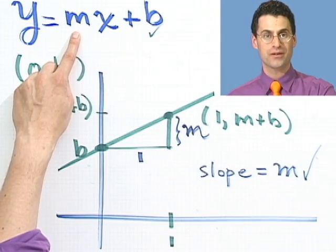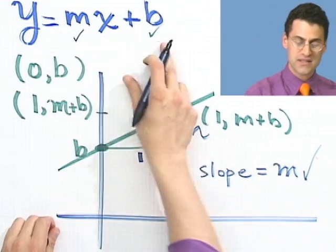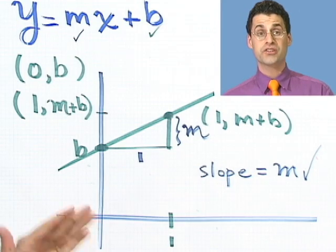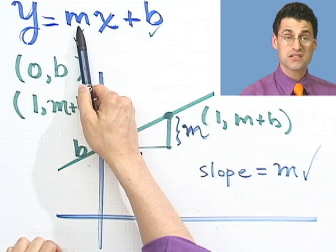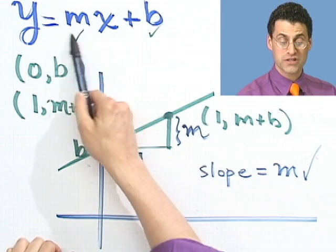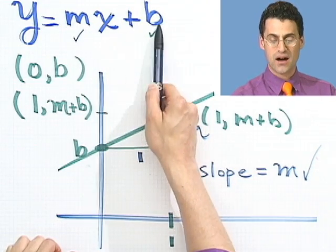That's the slope, just like promised. So this is slope-intercept form — the coefficient in front of x is always the slope, and the constant we add is always the y-intercept. Now you can see why. Let's try some easy examples to see how this plays out.